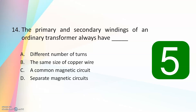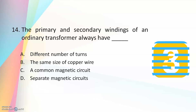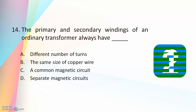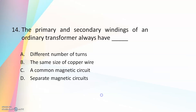Fourteenth question: the primary and secondary windings of an ordinary transformer always have — different number of turns, the same size of copper wire, a common magnetic circuit, or a separate magnetic circuit. The answer is they have a common magnetic circuit, which is the basic requirement of a transformer.